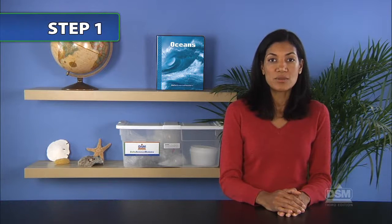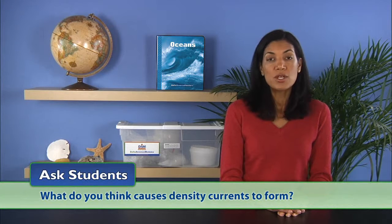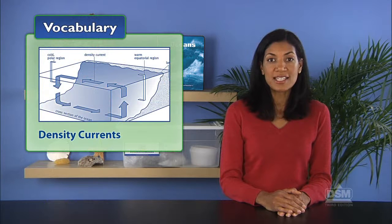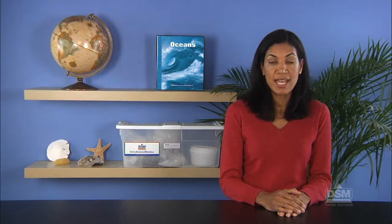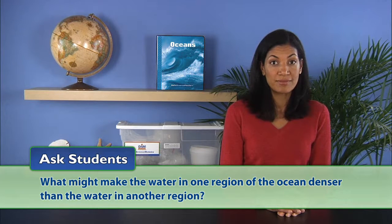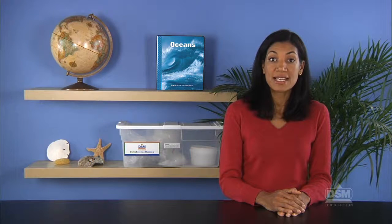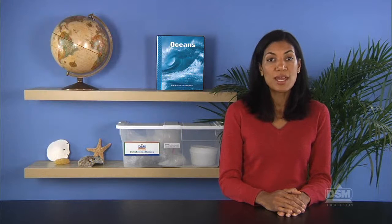To begin Session 1, review surface currents from Activity 7. Ask students: what do you think causes density currents to form? Students should respond that density currents form when regions of denser ocean water flow toward regions of less dense water. Then ask what might make the water in one region of the ocean denser than in another. Students should suspect that salinity, which they learned about in Activity 3, might make the water in one region denser than in another.